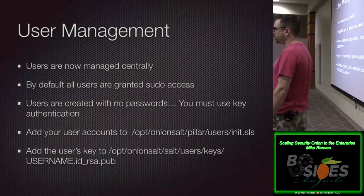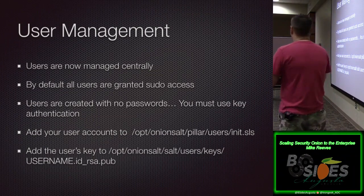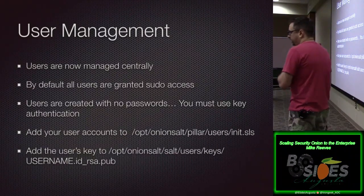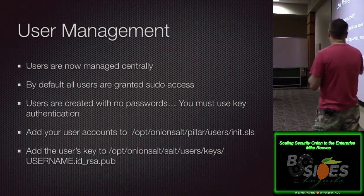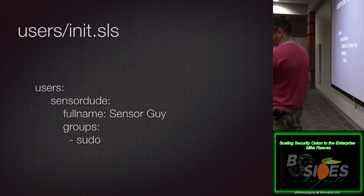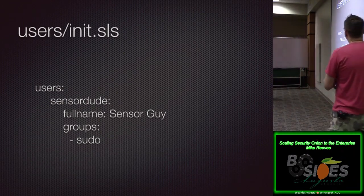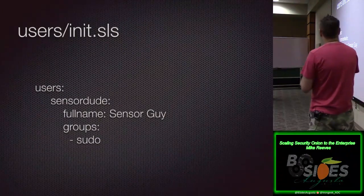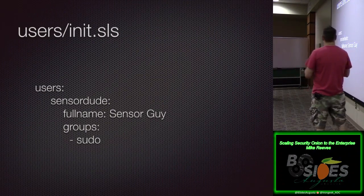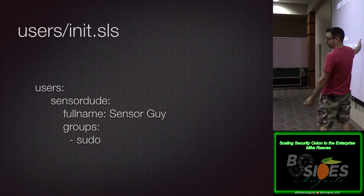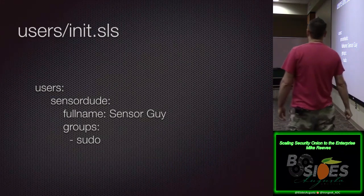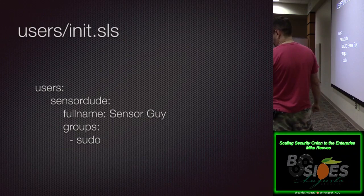Users are now managed centrally. They're granted sudo access by default, created with no passwords — it's all key-based. You drop your user accounts into a file and drop their public key into a directory. It's a Jinja format — use spaces not tabs. You put the username, the person's full name, and the group sudo. Next time a sensor checks in, it will create that user account and add them to that group.